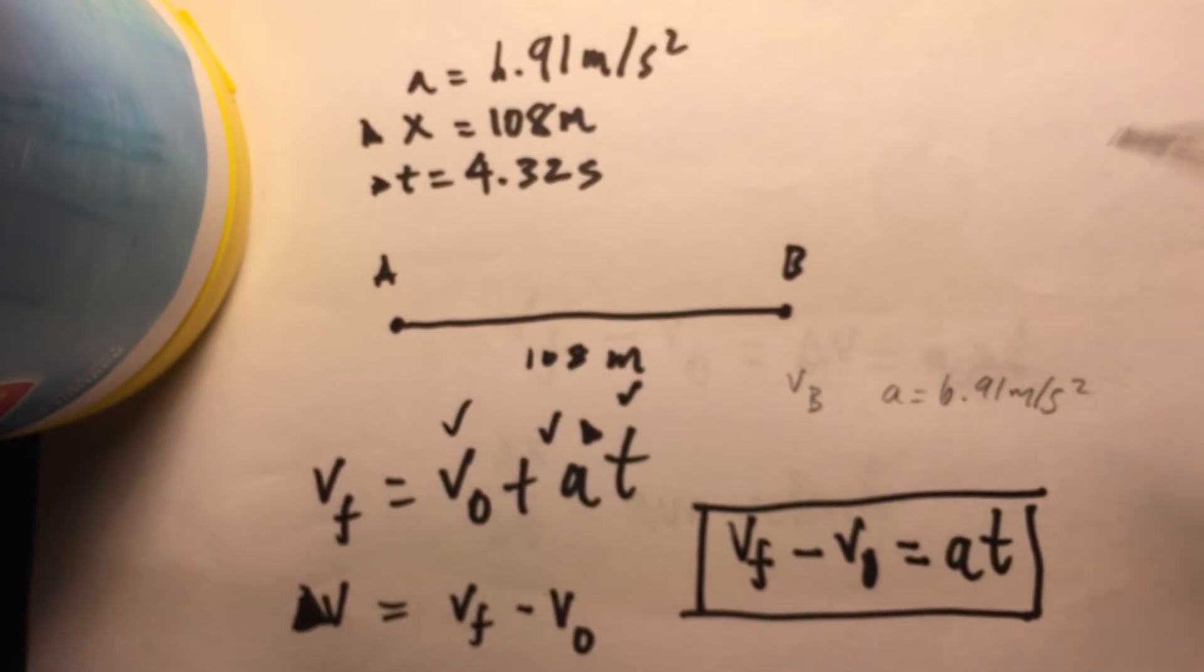If we recall from the last video, we had to find an expression for delta velocity, or change in v, which equals final velocity minus initial velocity, which ultimately equals acceleration times time. This expression was derived from one of the kinematic equations that says v final equals v0 plus at, which is simply stated as right here, just move this to the other side, and we have v0 plus at.